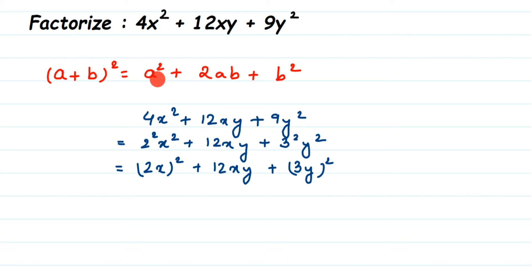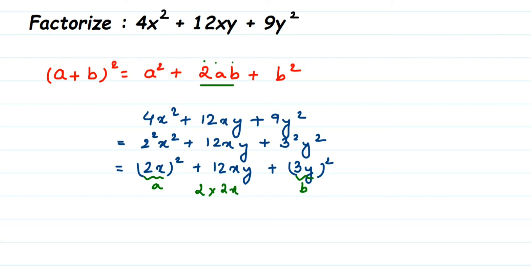Now compare: we have a² and (2x)², so in place of a we get 2x — not 2x², only 2x. So a = 2x. Similarly, b² is (3y)², so b = 3y. Now let's verify the middle term 2ab: substituting, 2 × 2x × 3y = 2 × 6xy = 12xy. We get 12xy, which matches! This confirms we are applying the first identity correctly.